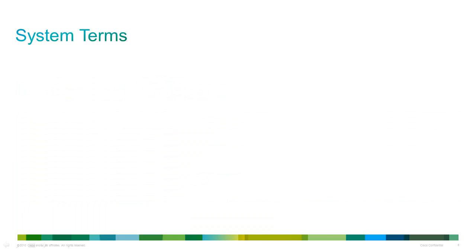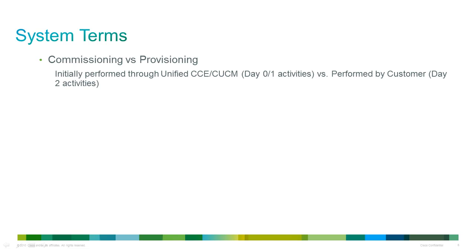Let's look at some of the terms used to describe Unified CCMP. Commissioning actions are performed by the host administrator, normally at system setup. An example would be an initial data load during Day 0 or Day 1 activities, typically performed through Unified CC or Unified CM tools. For example, IP phones and directory numbers can be commissioned by Unified CCMP on Unified CM. However, items such as calling search spaces and route partitions must be commissioned on Unified CM and then imported into Unified CCMP.